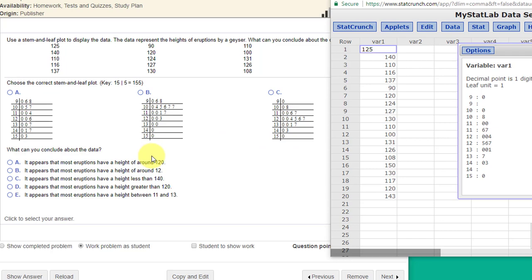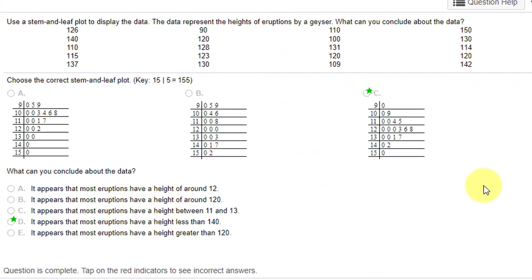what can you conclude about the data, and this trips a lot of students up. Now I refreshed, and this is a slightly different problem, but it's similar to what we just came up with. If we look at the distribution in the stem-and-leaf plot, we've got heights from 90 to 150, and they're kind of a nice triangular-shaped distribution with a lot in the